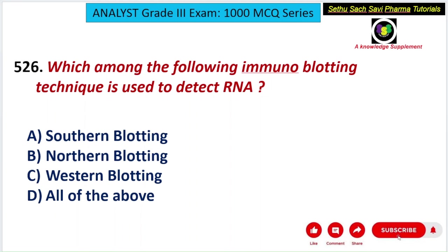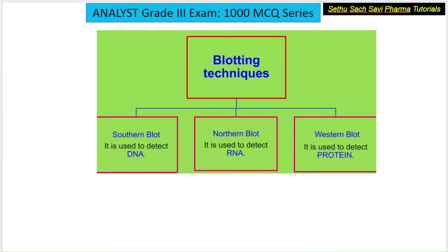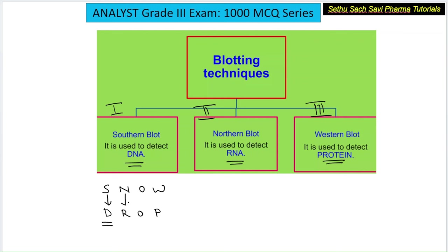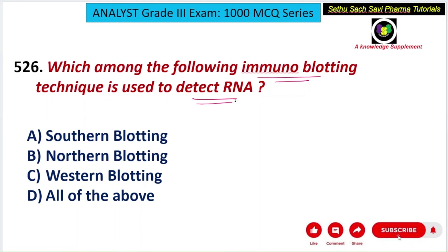This question is from biotechnology: which immunoblotting technique is used to detect RNA? Remember: Southern blot detects DNA, Northern blot detects RNA, and Western blot detects protein. You can remember this with the mnemonic 'SNOWDROP' — S for Southern (DNA), N for Northern (RNA), W for Western (protein). The answer is Northern blot.